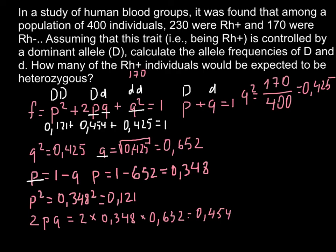But this is not the final answer yet, because now we know the frequency of the heterozygous. Now we can multiply the number of people who participated in this research, and we know that this is 400 people. We have to multiply 400 by the frequency of the heterozygous, which is 0.454. Our final answer would be 182 people. This is our answer today.